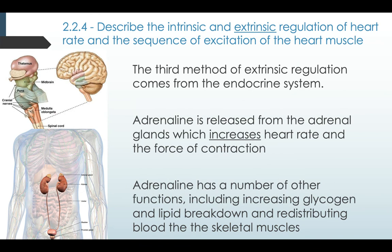The third method of extrinsic regulation comes from the endocrine system. Adrenaline is released from the adrenal glands, which increases heart rate and also increases the force of contraction. Be aware that adrenaline has a number of other functions related to the fight-or-flight response, such as increasing glycogen and lipid breakdown, and redistributing blood to the skeletal muscles.